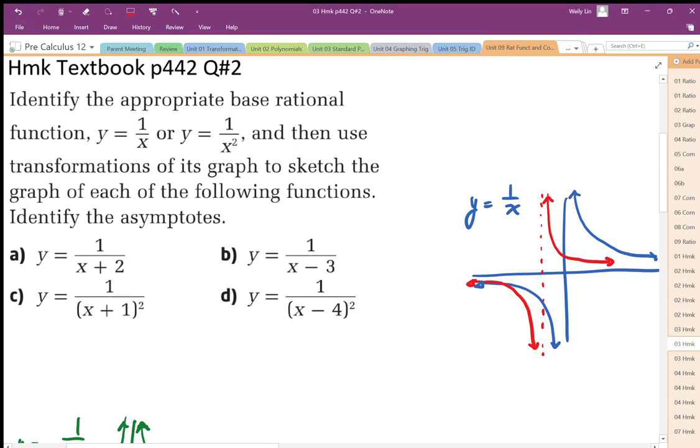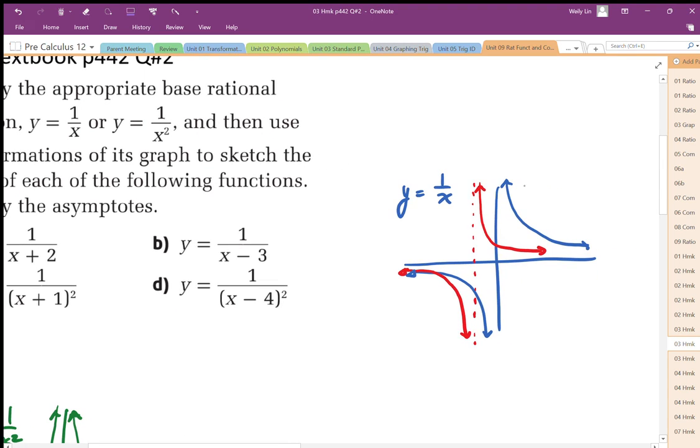For part b, 1 over (x minus 3), we can see it's been shifted to the right 3. We can look at that function as the shift of the original blue function over to the right 3, so the vertical asymptote shifts and all the points are shifted over plus 3.